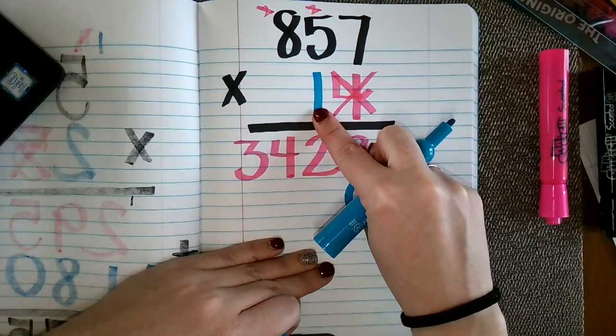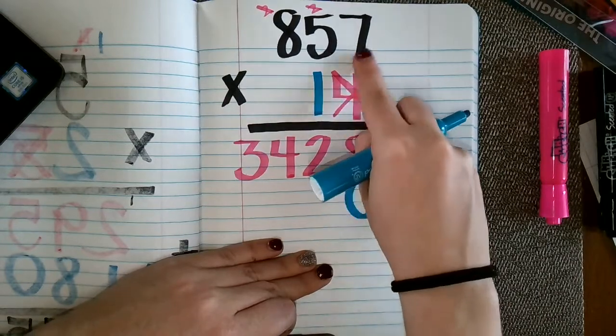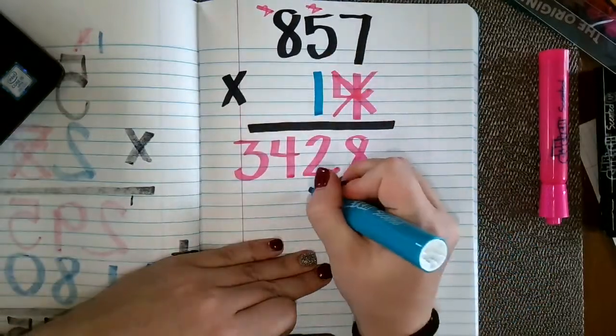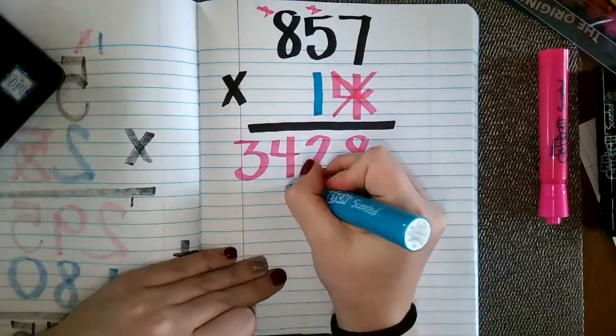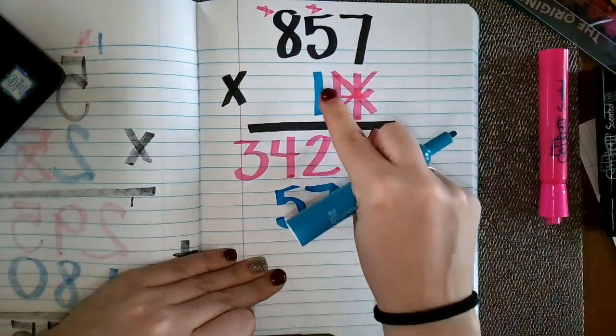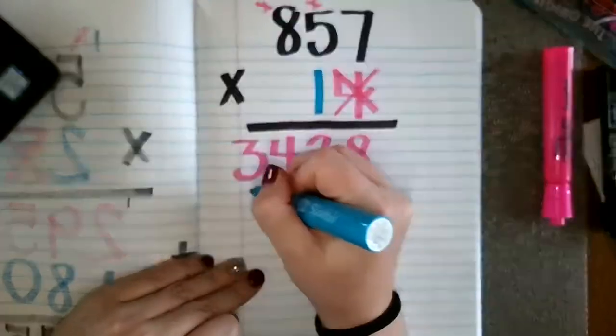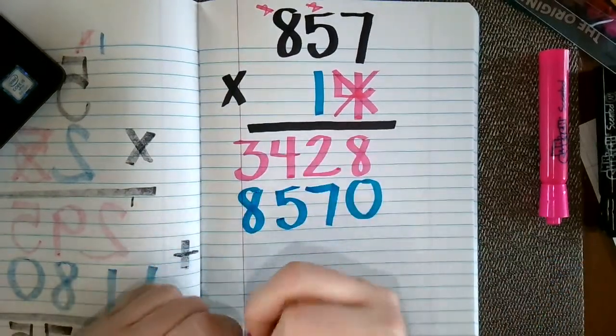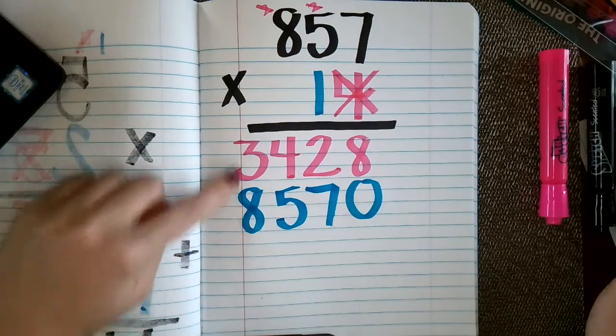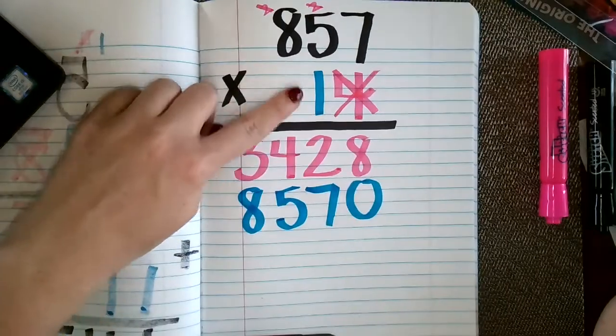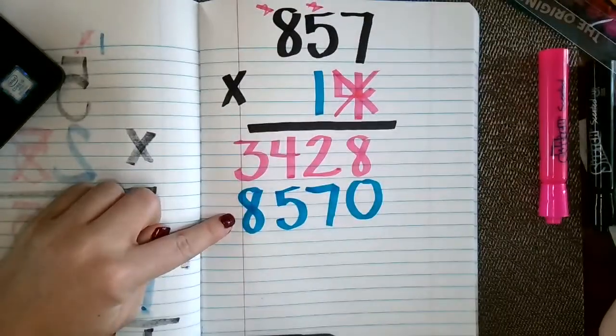Okay, so let's do that. One times seven is seven. One times five is five. And one times eight is eight. Wonderful. And that's pretty reasonable, right? That's pretty reasonable that 857 times 10 would be 8570.